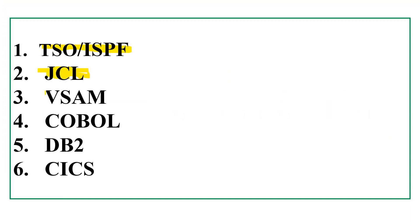After JCL we are going to start VSAM, which will take around three to four days. You can WhatsApp me and I will send you the detailed table of content showing what topics are covered in TSO/ISPF, JCL, and VSAM. The order is: once we complete VSAM, then COBOL, then DB2, and then CICS — those are the six modules we are going to discuss in this particular training.